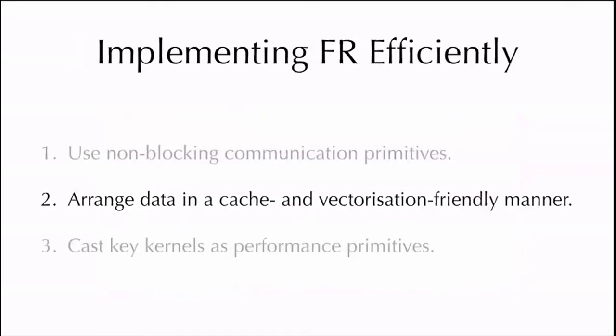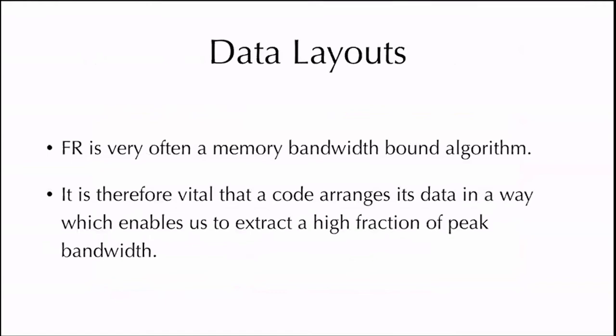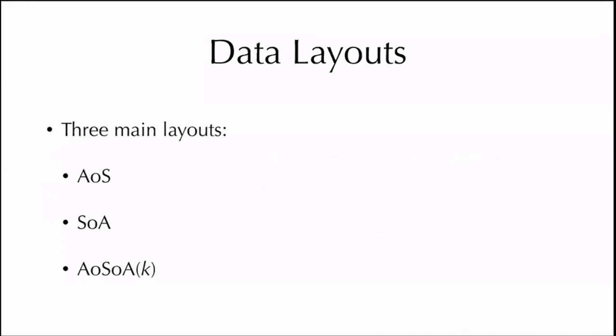The next important thing, especially for modern hardware, is arranging data in a cache and vectorization friendly manner. Flux reconstruction in many of its forms is very often a bandwidth bound algorithm — what limits our performance isn't so much flops but memory bandwidth. It's therefore important that a code arranges its data in a way which enables us to extract as much memory bandwidth as possible while also avoiding unnecessary transfers. Generally speaking, when writing an HPC code there are three main ways of laying things out in memory, termed AOS, SOA, and AOSOA.